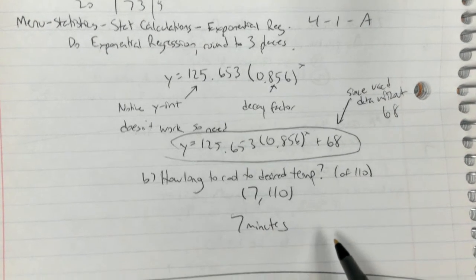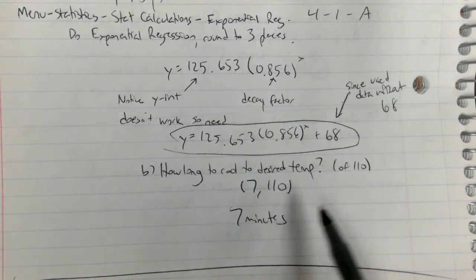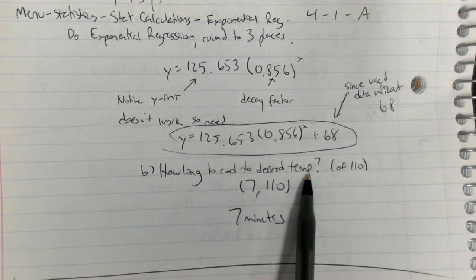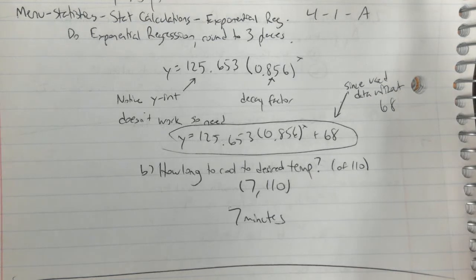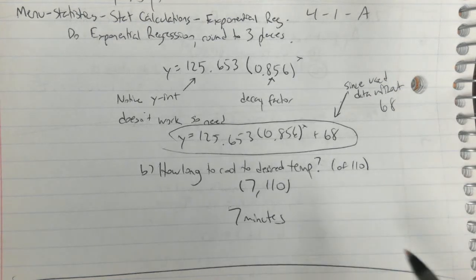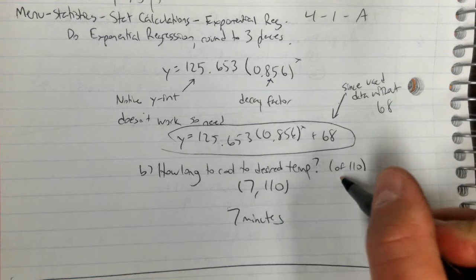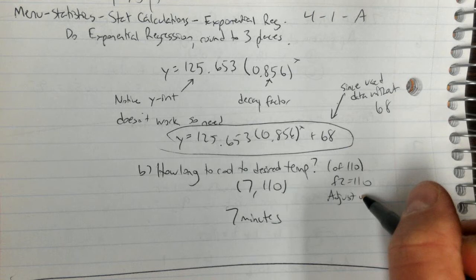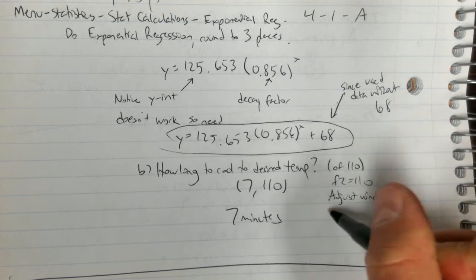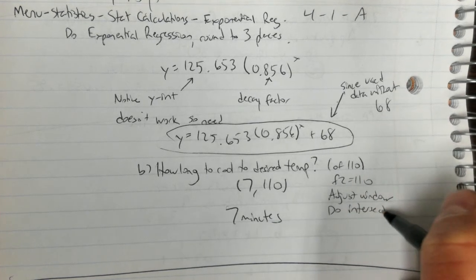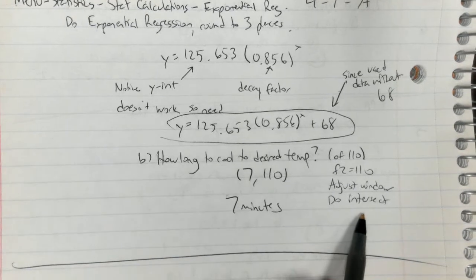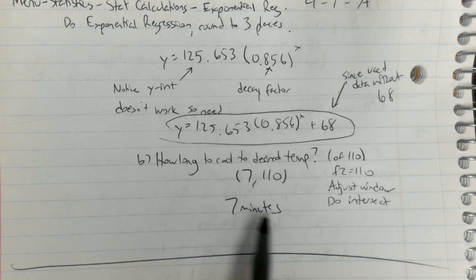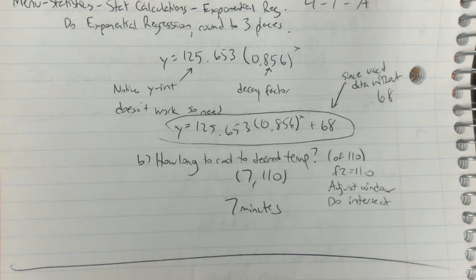The next question says for part B, how long does it take to cool to the desired temperature? The desired temperature was 110 degrees in my problem. So you'd basically graph f2 equal 110, adjust your window, and do the intersection like we did before. In this case I get 7 for 7 minutes, so 7 minutes with 110 degrees Fahrenheit.